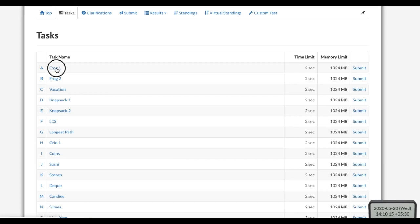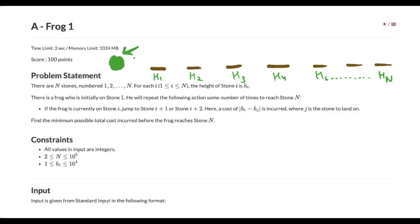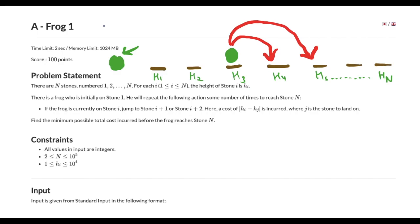The first problem is named Frog1. The problem says that there are n stones of different heights. The first stone has height h1, second has height h2, third has h3, and so on up to the last stone with height hn. There also exists a frog with a special property: if the frog is at a particular stone, it can jump to the next stone or to the second next stone. There is always a cost for every jump — if the frog jumps from the ith stone to the jth stone, the cost is the absolute difference between the heights, that is |h[i] - h[j]|.